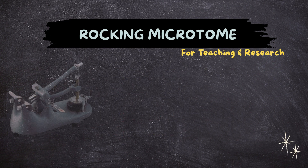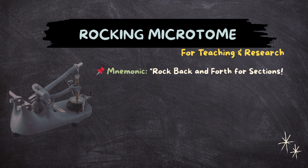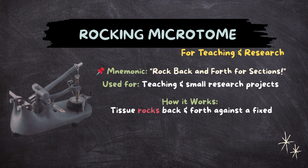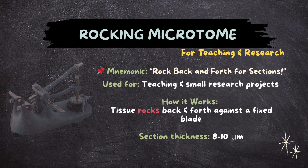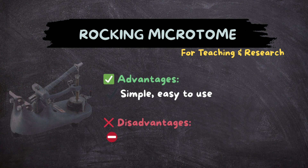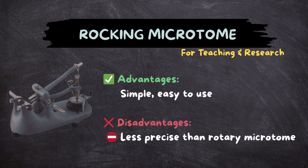Rocking Microtome — for teaching and research. Mnemonic: 'Rock back and forth for sections.' Used for teaching and small research projects. The tissue rocks back and forth against a fixed blade. Section thickness: 6 to 10 micrometers. Advantages: simple and easy to use. Disadvantages: less precise than the rotary microtome.